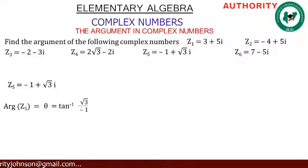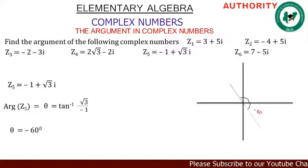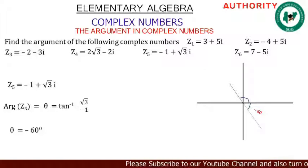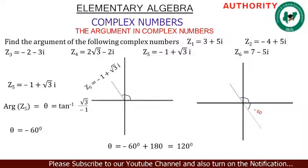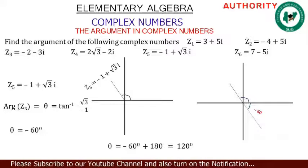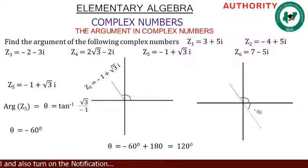For z5 = -1 + √3i: arg(z5) = θ = tan⁻¹(√3 / -1) = -60°. On our diagram it's not corresponding, so we add 180°: -60° + 180° = 120°.